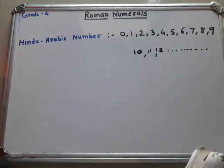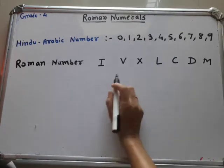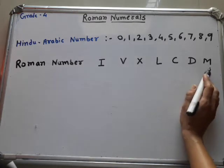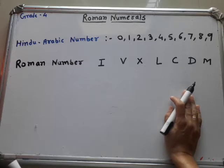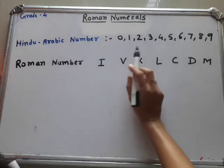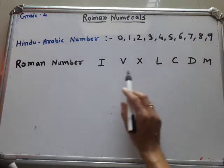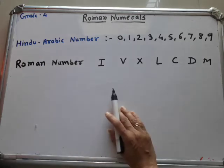But in Roman numerals we use only 7 symbols: I, V, X, L, C, D, and M. These are the Roman numerals. Roman numerals originated in ancient Rome, while Hindu-Arabic numerals were first represented by Hindus and then by Arabs, which is why they are called Hindu-Arabic numbers.